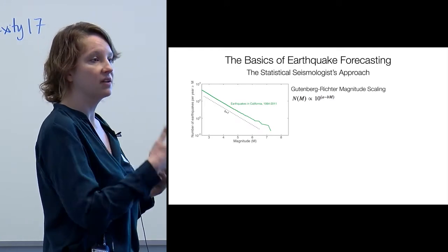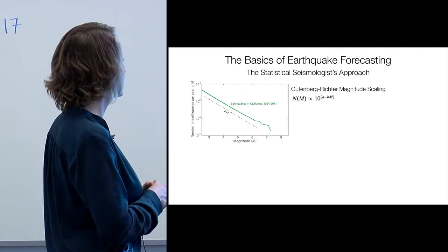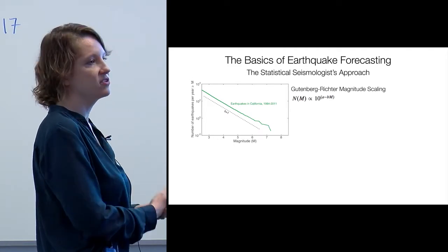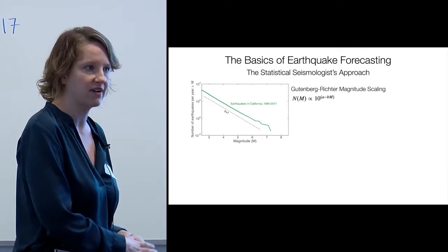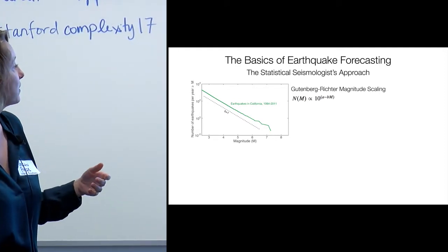What that means is there's tons of little earthquakes and very few big earthquakes. As you go up a unit in magnitude, you have 10 times fewer earthquakes. So for every magnitude seven, there's 10 magnitude sixes, 100 magnitude fives, and so on. The little ones really drown out the big ones in terms of signal.